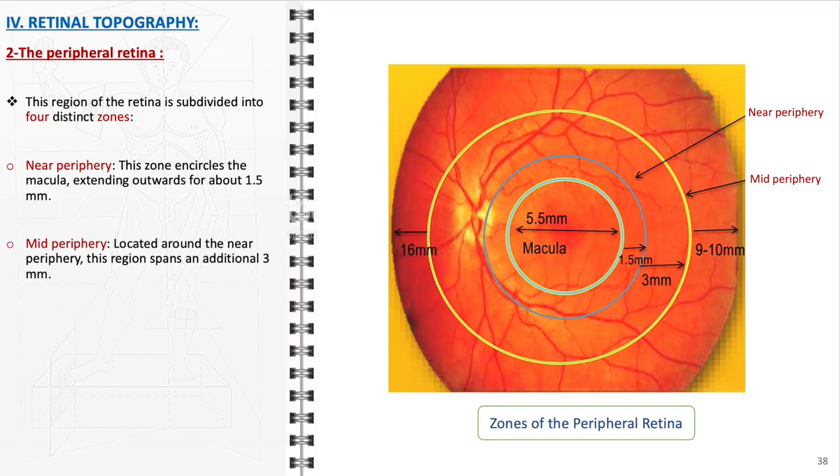2. Mid-periphery, located around the near periphery, this region spans an additional 3 mm. It marks a further transition into the peripheral retina with a gradual shift in the concentration and type of photoreceptors. This area is vital for peripheral vision under lower light conditions.